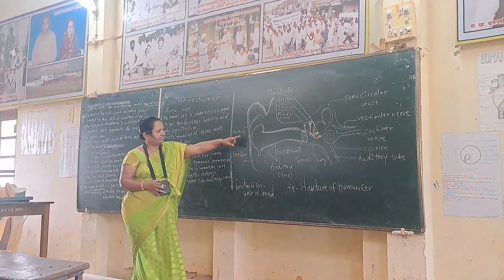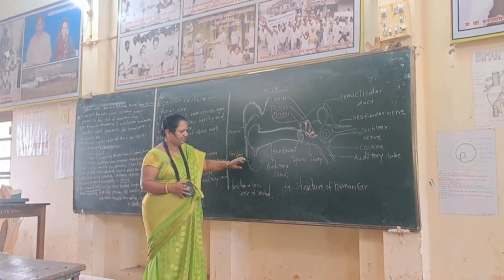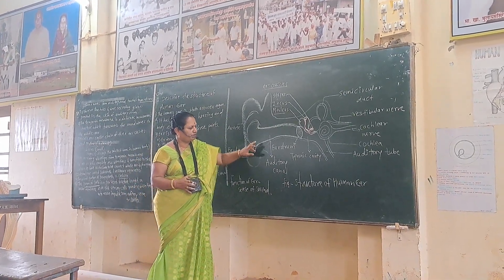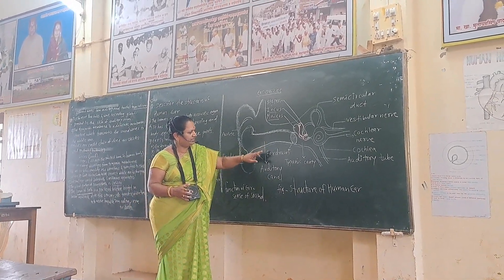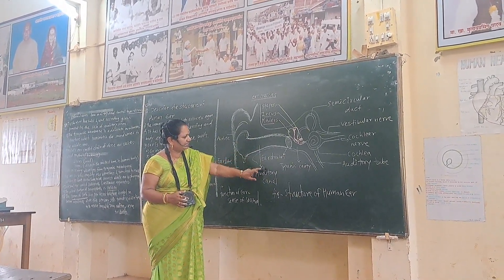The external ear consists of the auricle, the ear lobe, and the auditory canal. The middle ear also includes the auditory canal.